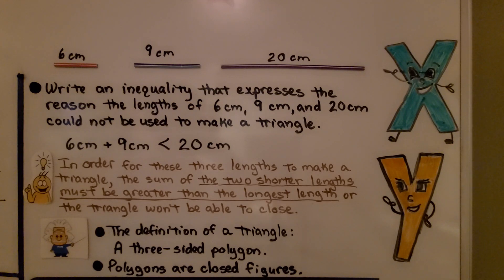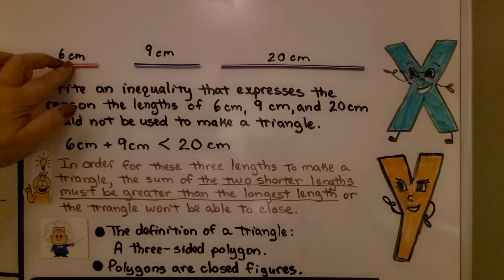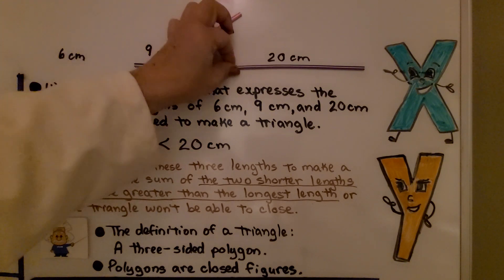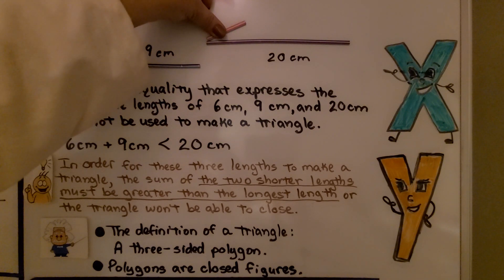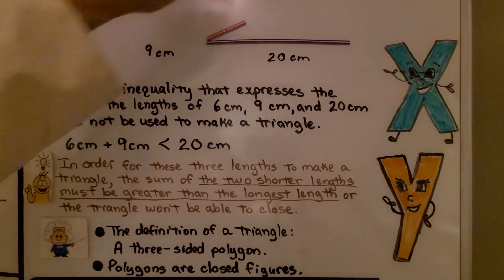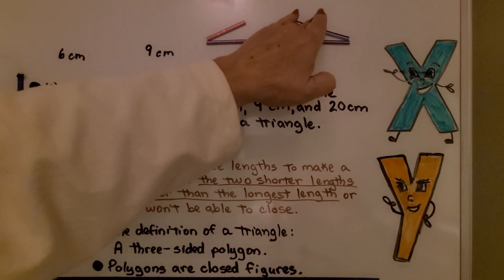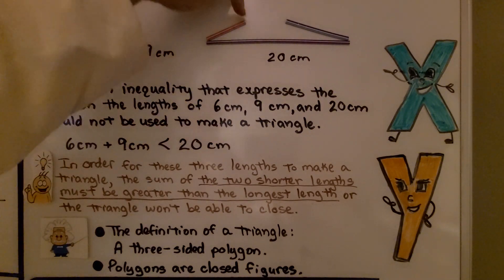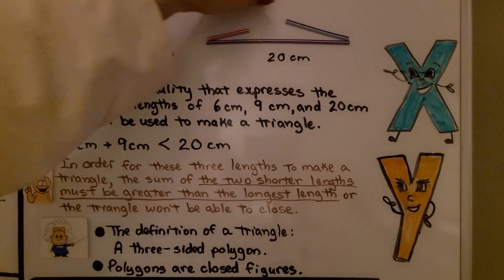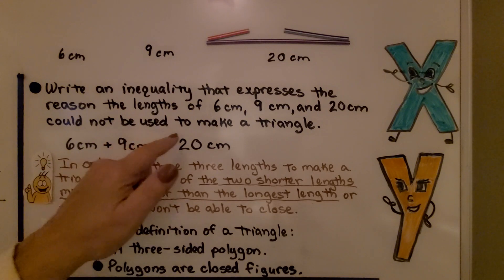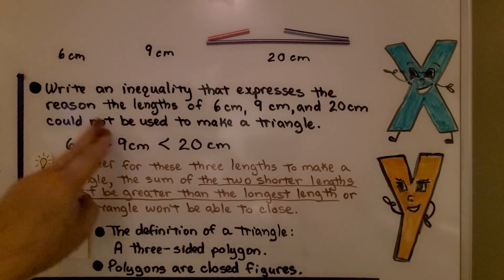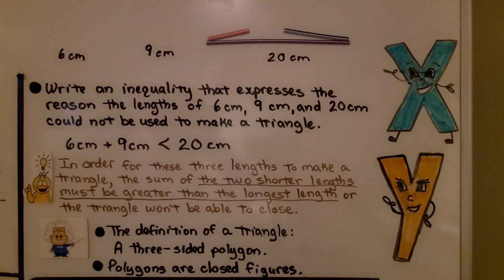If we took this 6 cm triangle, and we closed it right here with an angle, and we took this 9 cm one, they're not long enough to close to make a triangle. And no matter how much we bring this down, it won't close. We can't make a triangle because 6 cm plus 9 cm is less than 20 cm. This left side would have to have a sum greater than 20 in order for that triangle to close.